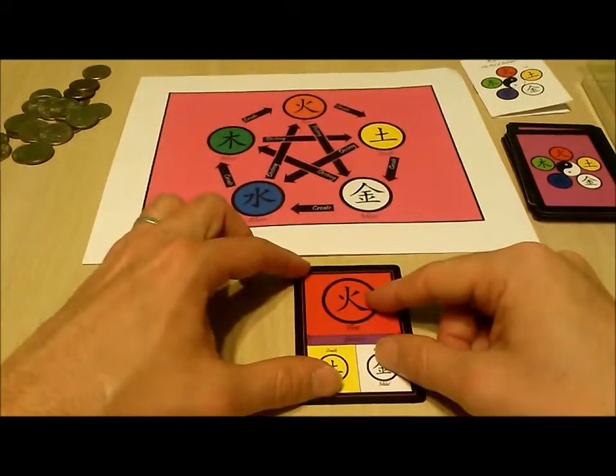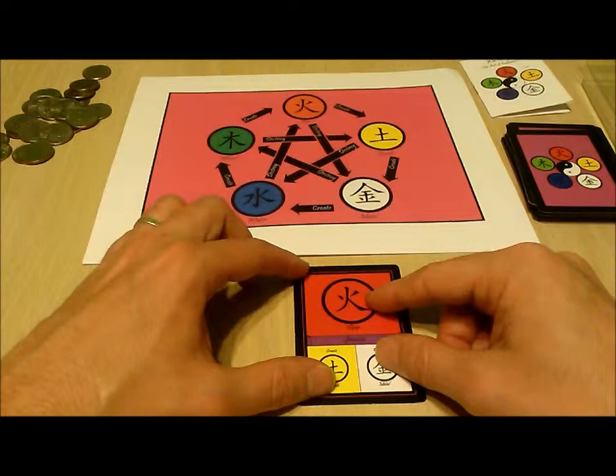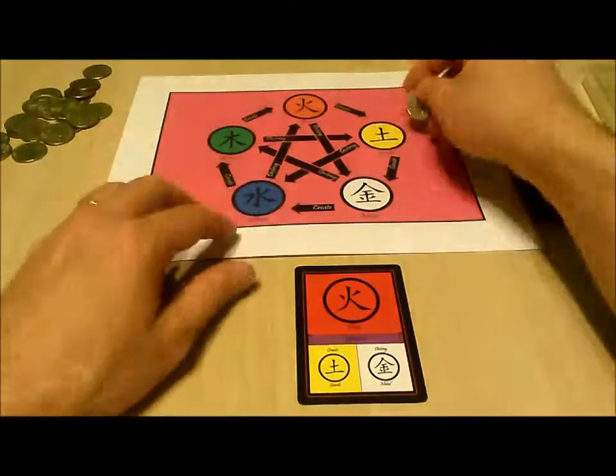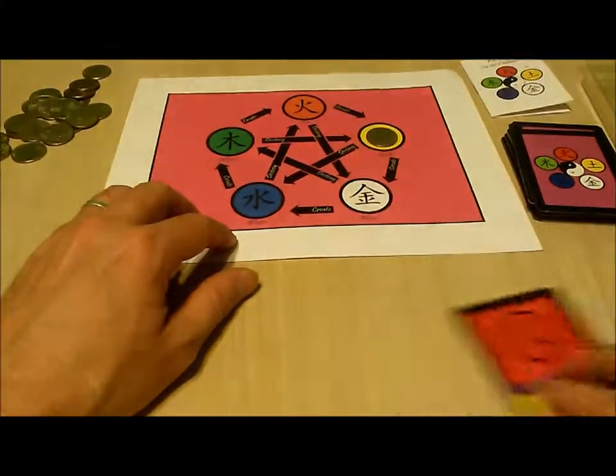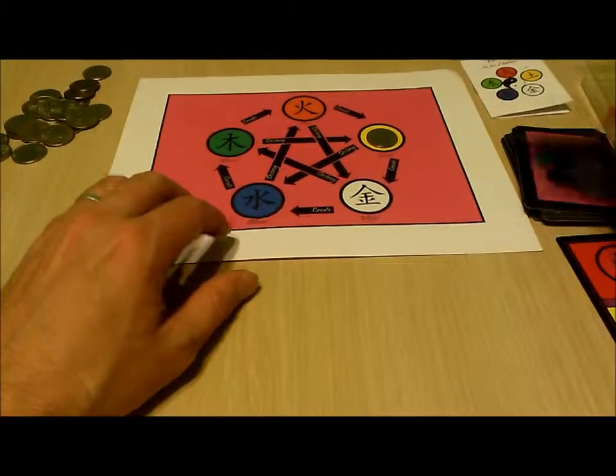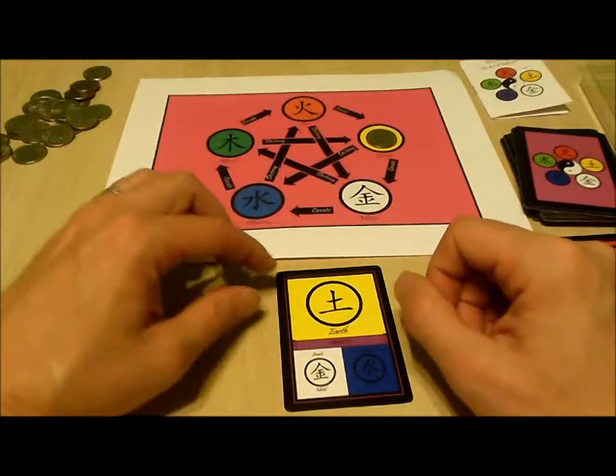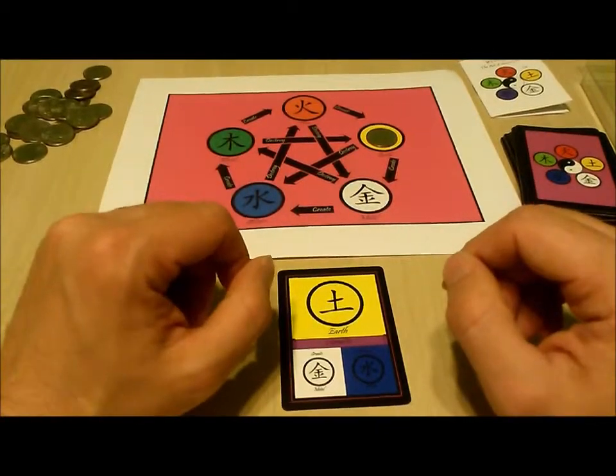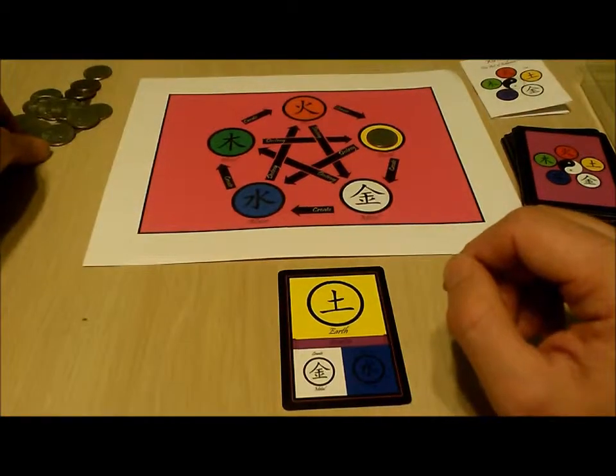So we start with a fire card which creates earth and destroys metal. Since there's no tokens on metal we simply place the token on earth. We now draw an earth card which creates metal and destroys water. Again we have no tokens on water so we place one on earth.